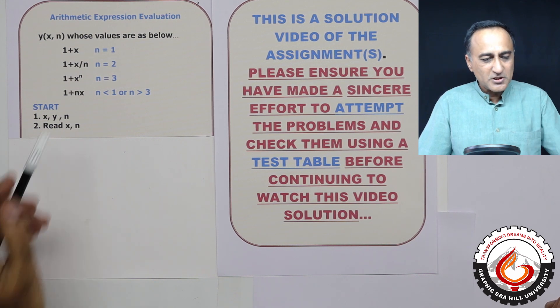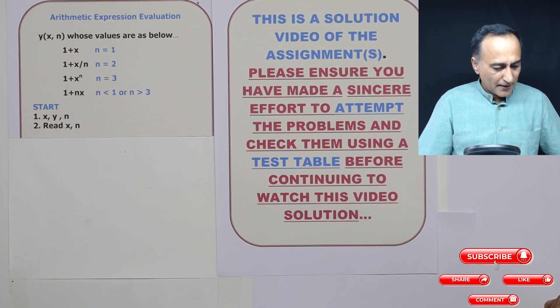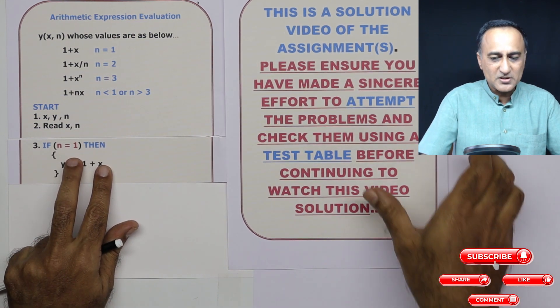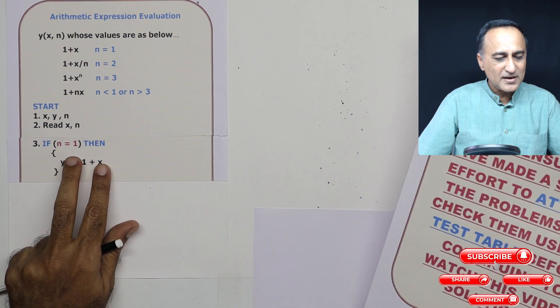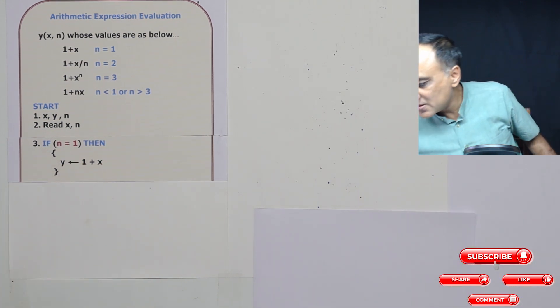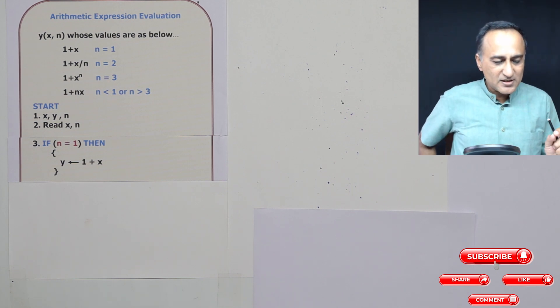Now the first thing you are going to check is: is n equal to 1? So if n is equal to 1, what you are going to do here is we are going to say y is equal to 1 plus x. This is the first thing we are doing. So if n is equal to 1, y is 1 plus x.